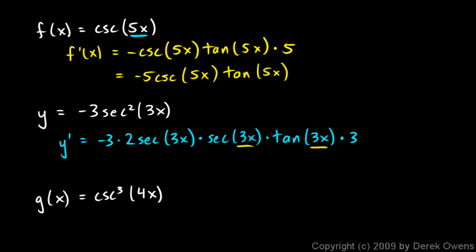I still have an inner function on that, so I multiply by the derivative of the inner function there which is just 3. Now let's clean up a little bit. This is going to be negative 3 times 2 times 3, that's negative 18. And then I have secant of 3x cubed, so it's negative 18 secant squared 3x times the tangent of 3x.